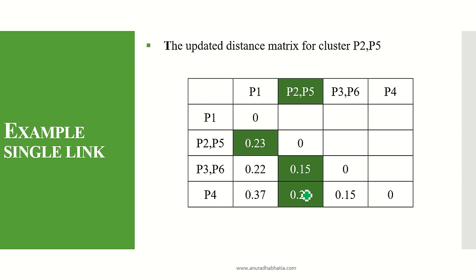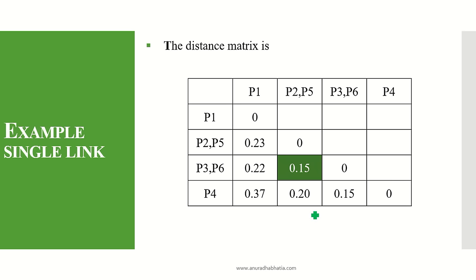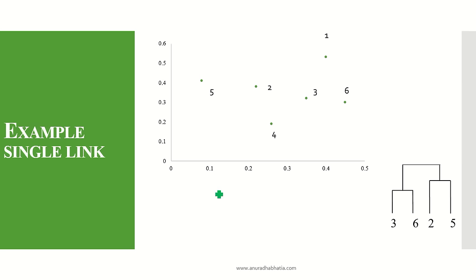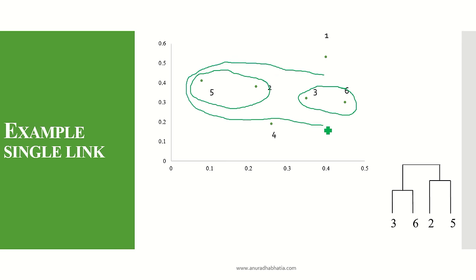From the updated matrix, the minimum value is 0.15, which forms a cluster between {P2,P5} and {P3,P6}. This is plotted on the graph: the first cluster is {P3,P6}, the second is {P2,P5}, and the third cluster is their combination {P2,P5,P3,P6}. The dendrogram is updated accordingly to show these three levels of merging.